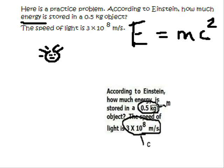Here we go. According to Einstein, how much energy is stored in a 0.5 kilogram object? So what I do here is circle kilograms, and I match it with the symbol in the equation, which is mass. If I keep going, the speed of light is 3 times 10 to the 8 meters per second. So I know that matches with c in the equation. And so energy is what we're going to be calculating.